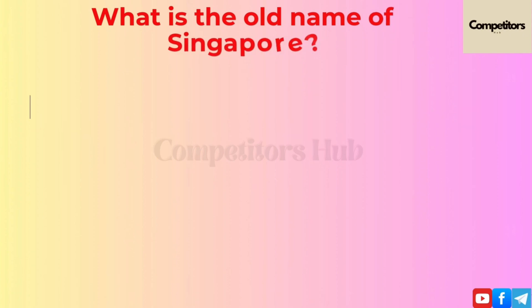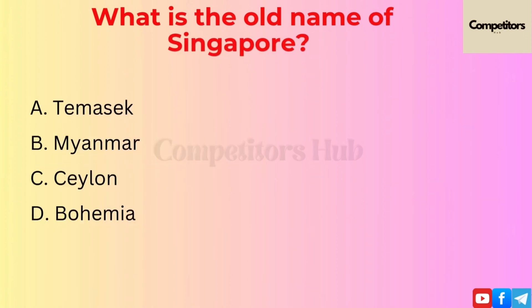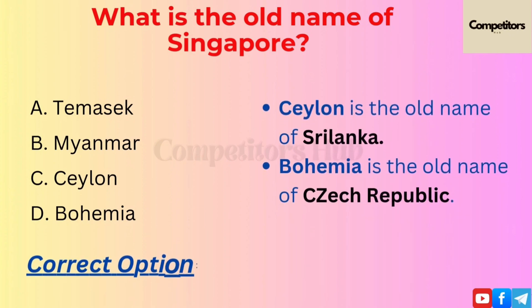The next question is: what is the old name of Singapore? Option A: Temasek. Option B: Myanmar. Option C: Ceylon. Option D: Bohemia. The correct option is A, Temasek.